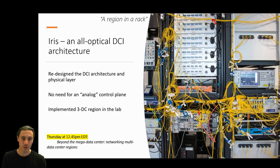The work in the IRIS project resulted in rethinking the whole architecture and physical layer in DCI and allowed us to implement and emulate a small-scale region in our lab at Cambridge. This picture shows a small part of our lab. The IRIS architecture does not require an analog control plane, significantly lowering the bar for deployment, and our analysis shows that this is feasible with truly minimal performance impact. To find out more details, please attend our talk on Thursday and take a look at the IRIS paper.